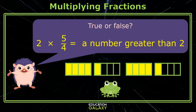True or false? 2 times 5 fourths is a number greater than 2. 5 fourths is greater than 1, so that's true. Woo, I'm good.